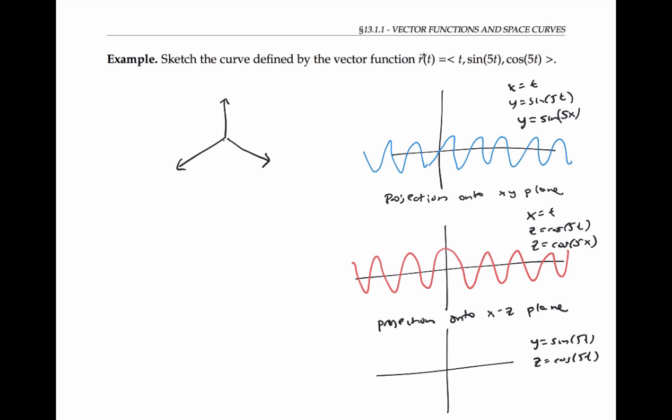Now, since sine squared of five T plus cosine squared of five T is always equal to one, this is like saying y squared plus z squared equals one, which means our graph should be the graph of a circle with radius one. So the projection of our curve onto the yz plane should just be a circle.